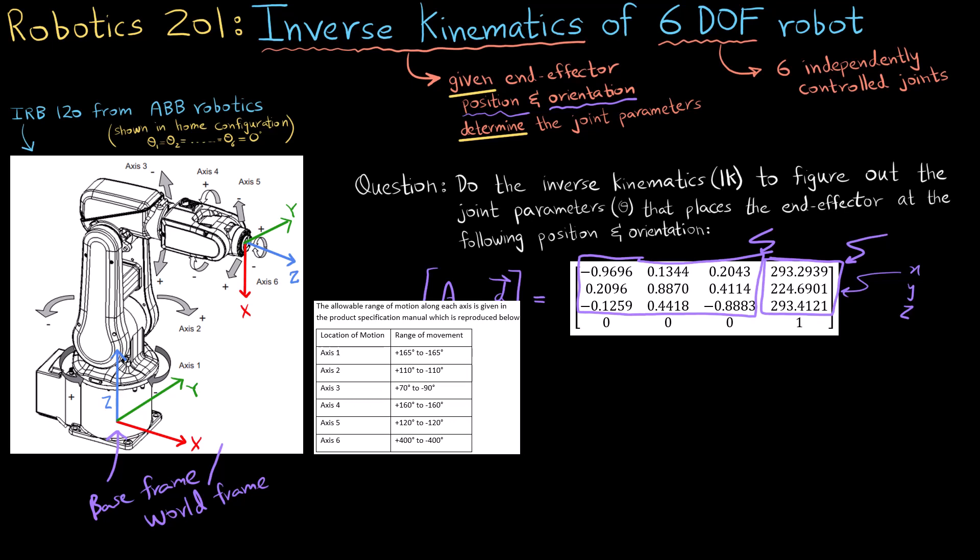Now from the product specification manual I have picked out this chart which just shows you how much the motors can rotate in every direction and since it is a physical robot it makes sense that the motors cannot rotate equally in all directions due to physical constraints.